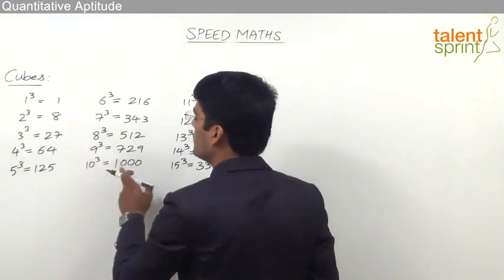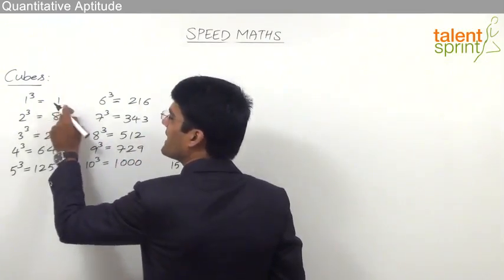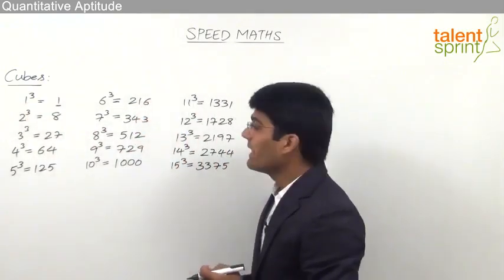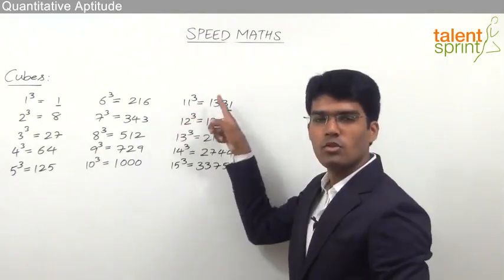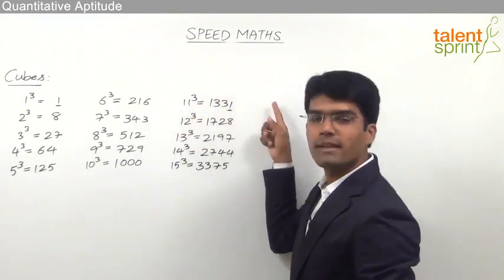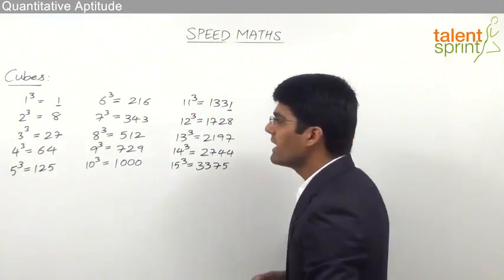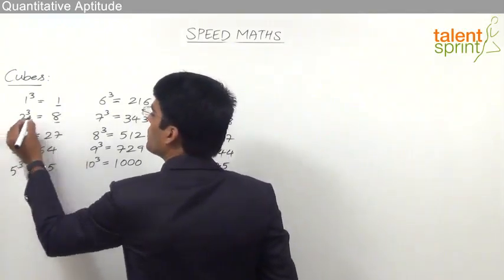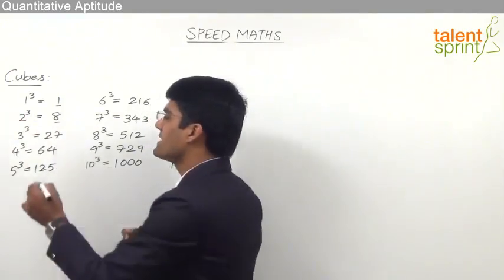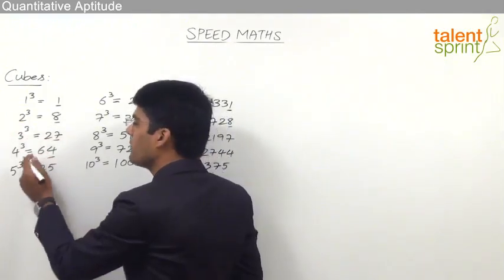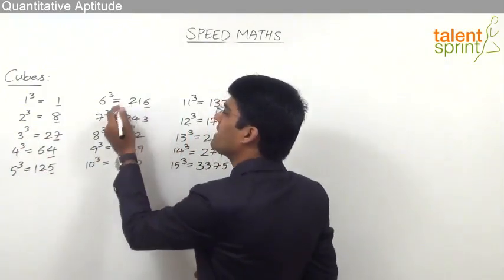From 1 to 10 cubes, the only number which ends with 1 is 1 itself. So when a number ends with 1, its cube root also ends with 1. For example, 11 cube is 1331, so the cube root of 1331 is 11. Similarly, when a number ends with 8, cube root ends with 2. When a number ends with 7, cube root ends with 3. When a number ends with 4, cube root ends with 4. When a number ends with 5, cube root ends with 5. For 6, it is 6.